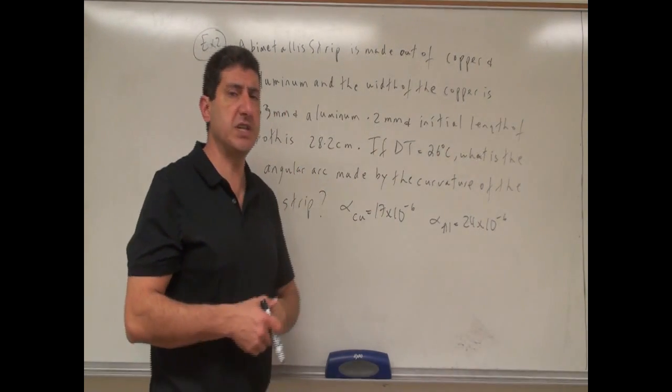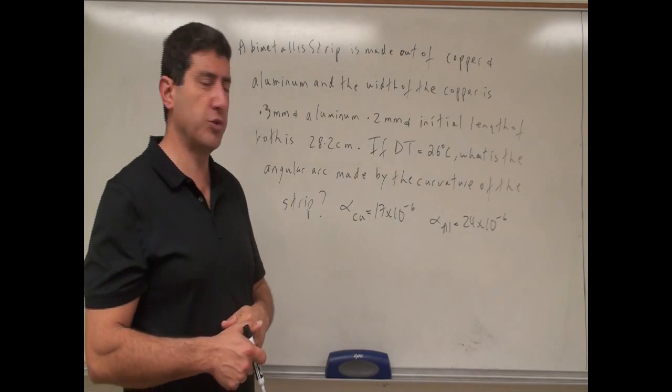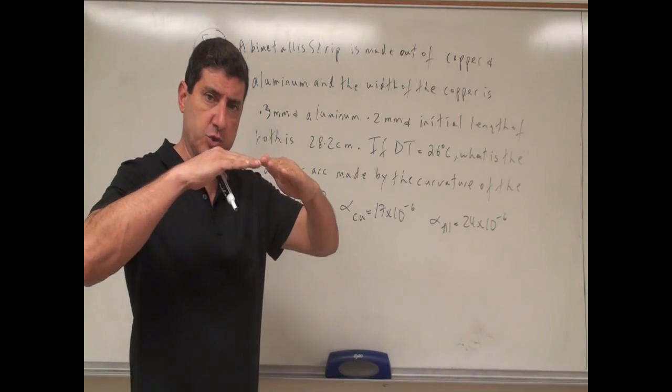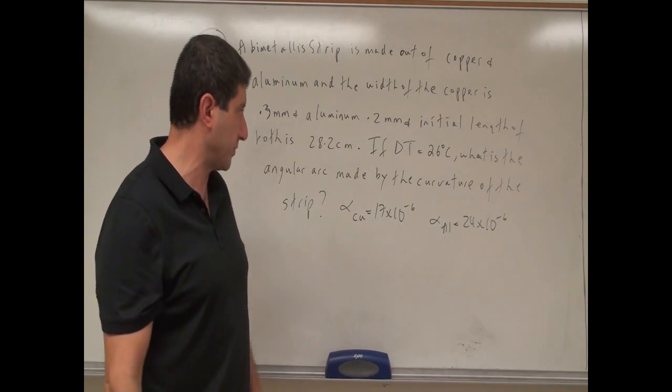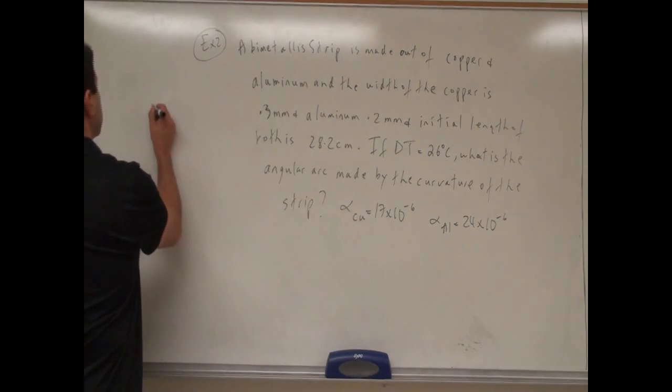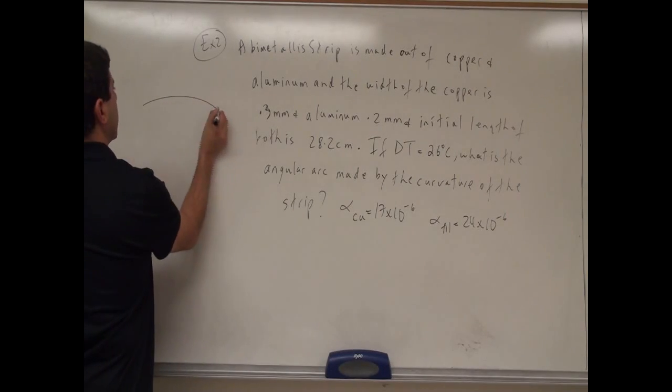So let's say we heat up this bimetallic strip. What's going to happen is that the strip is going to curve. So it says, what is the angular arc made by the curvature of the strip? Like this, it's going to curve. Why is that?